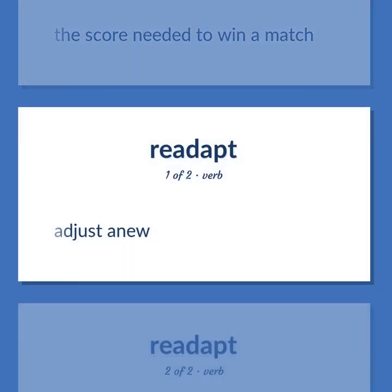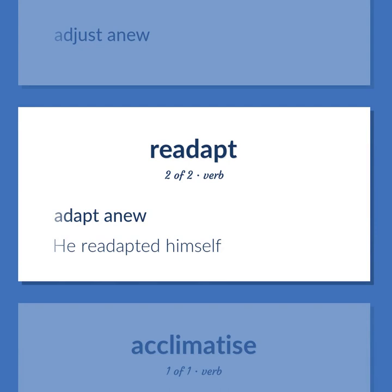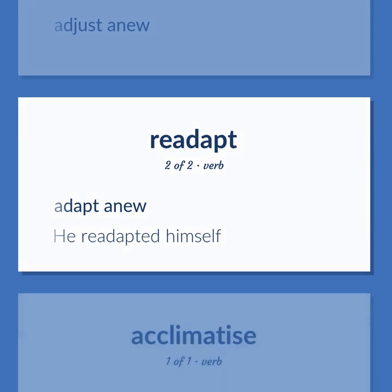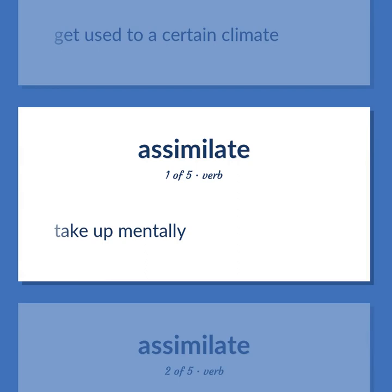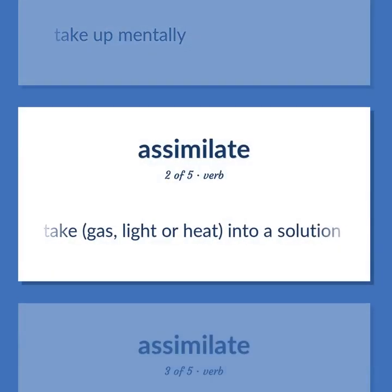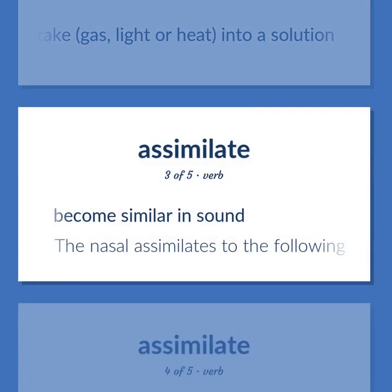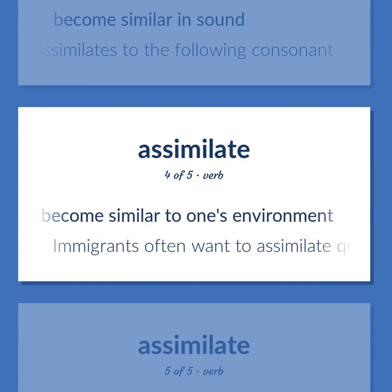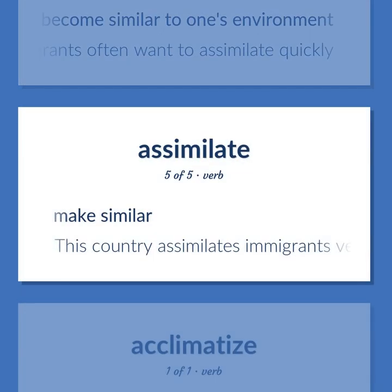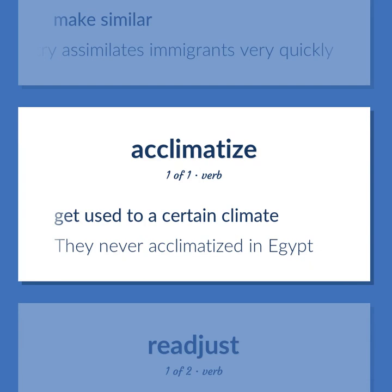Readjust: adjust anew, adapt anew — he readapted himself. Get used to a certain climate. Take up mentally. Assimilate: take gas, light, or heat into a solution; become similar in sound — the nasal assimilates to the following consonant; become similar to one's environment — immigrants often want to assimilate quickly; make similar — this country assimilates immigrants very quickly. Acclimatize: get used to a certain climate — they never acclimatized in Egypt.